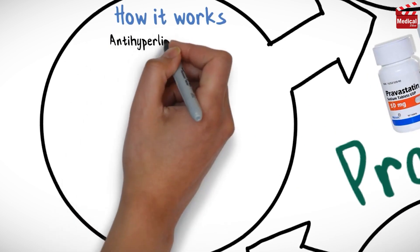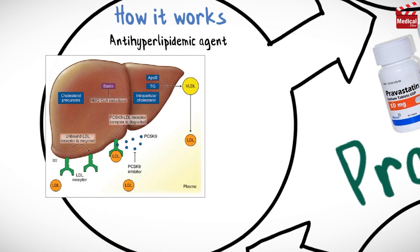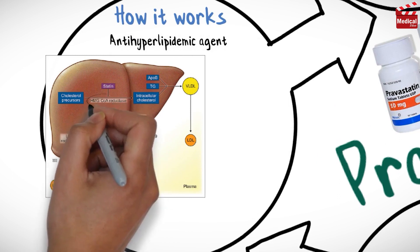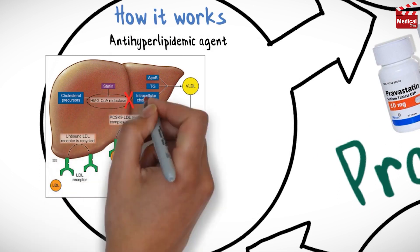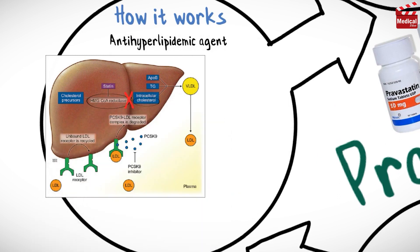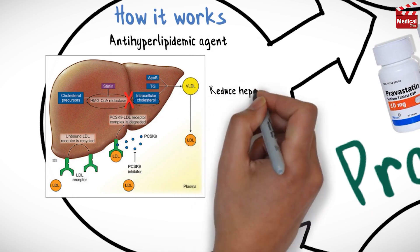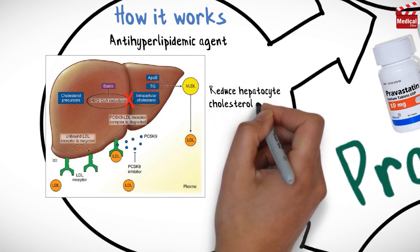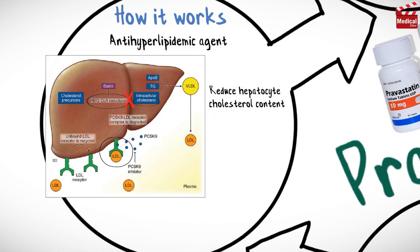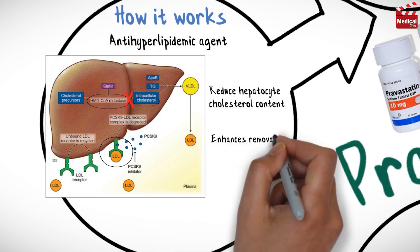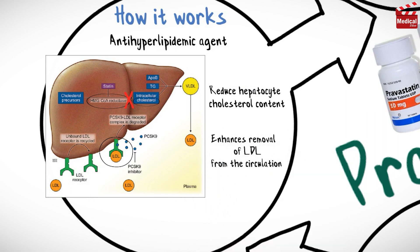Pravastatin is an anti-hyperlipidemic agent. It inhibits HMG-CoA reductase, which is the rate-limiting step for cholesterol formation in the liver, to reduce hepatocyte cholesterol content, stimulate expression of LDL receptors, and ultimately enhances removal of LDL from the circulation.